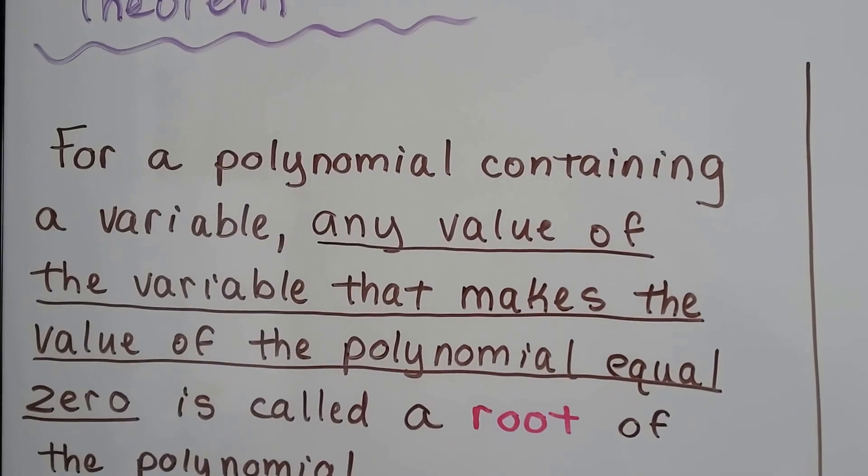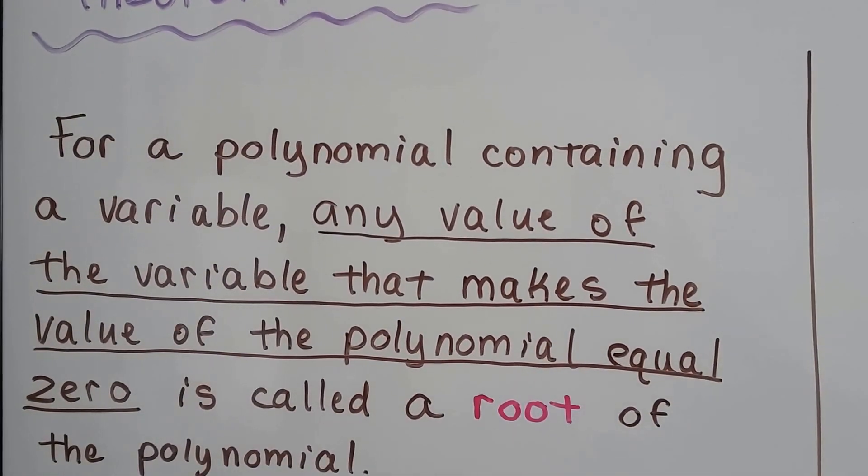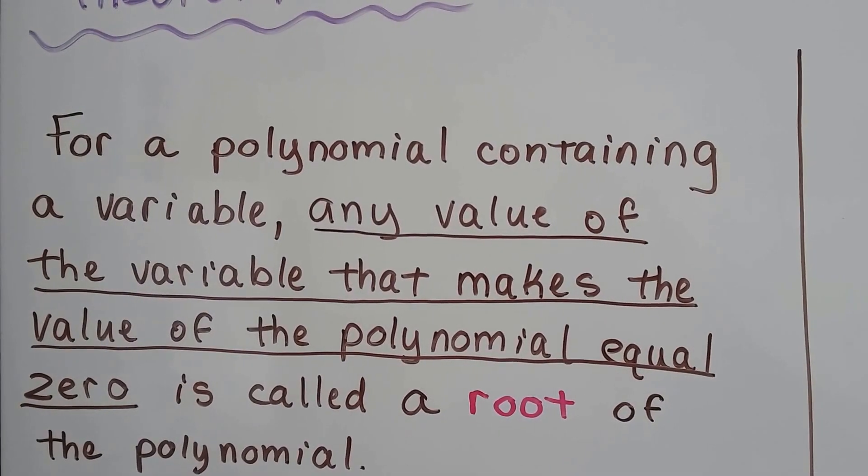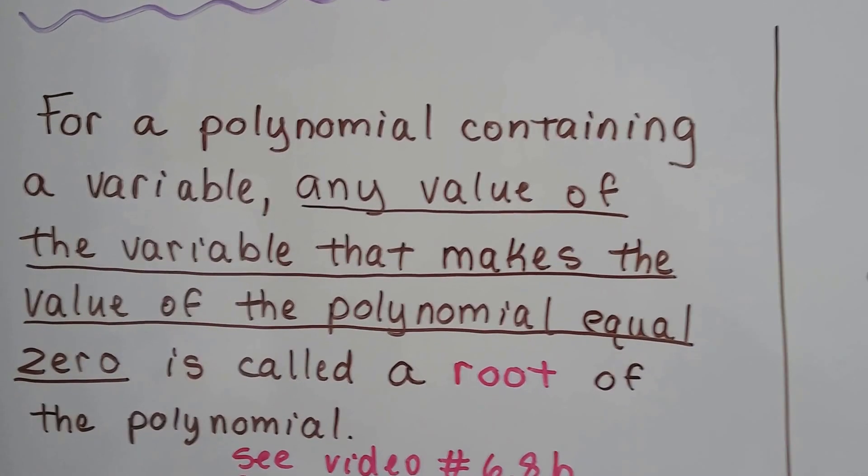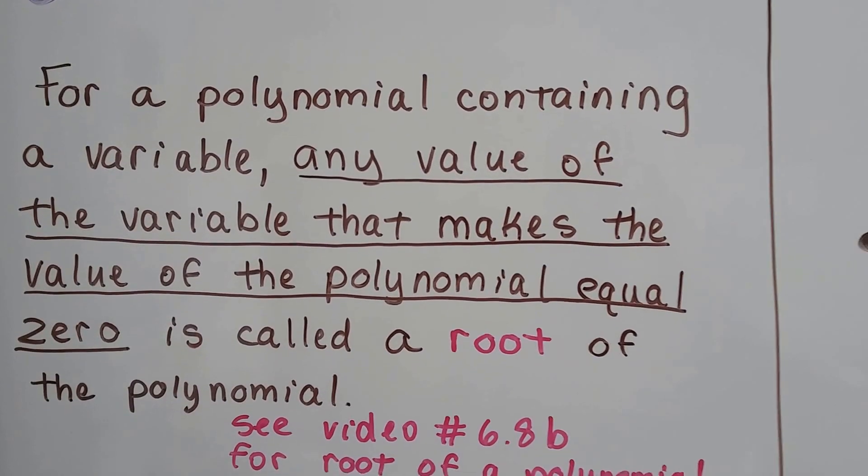For a polynomial containing a variable, any value of the variable that makes the value of the polynomial equal zero is called a root of the polynomial.